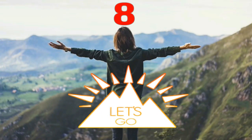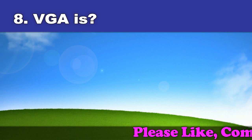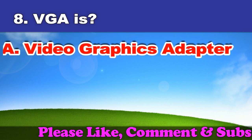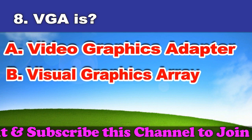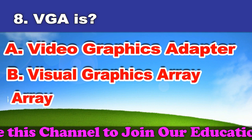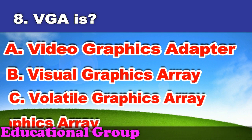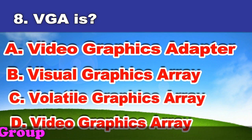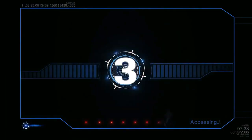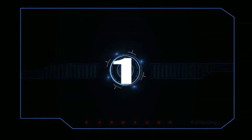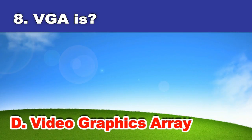Eighth question: VGA is. A. Video graphics adapter. B. Visual graphics array. C. Volatile graphics array. D. Video graphics array. And the answer is video graphics array.